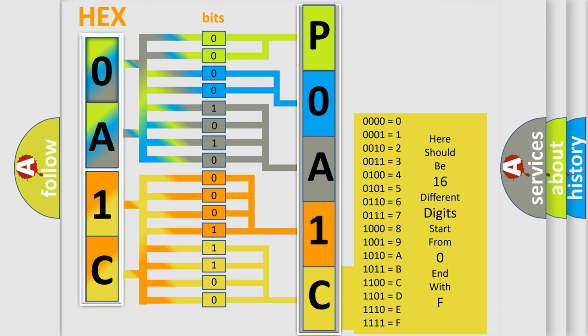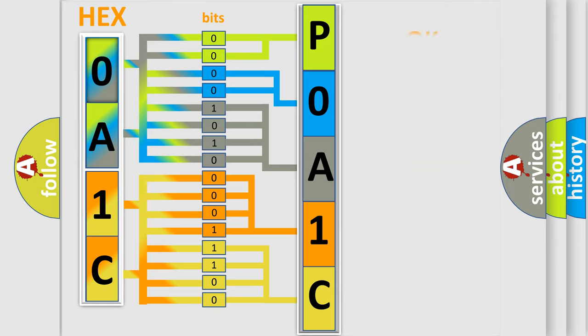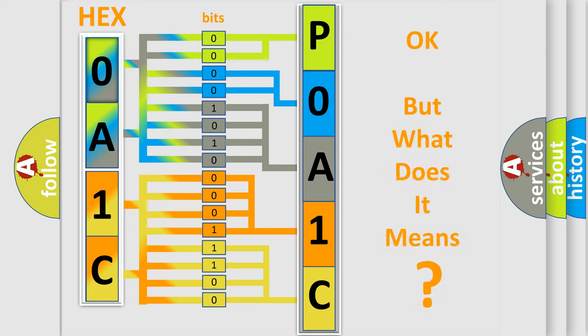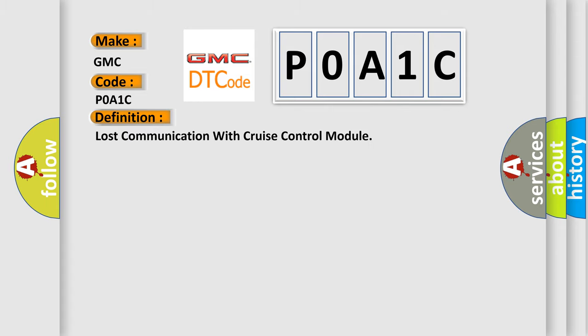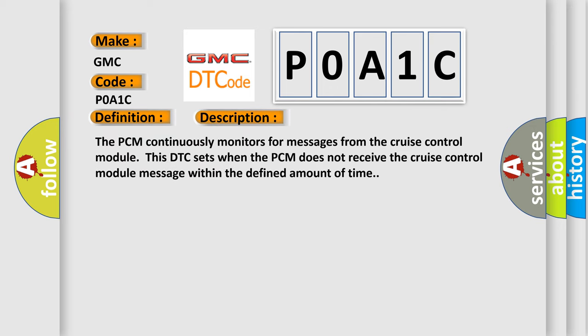We now know in what way the diagnostic tool translates the received information into a more comprehensible format. The number itself does not make sense to us if we cannot assign information about what it actually expresses. So, what does the Diagnostic Trouble Code POA1C interpret specifically for GMC car manufacturers? The basic definition is: Lost communication with cruise control module. The PCM continuously monitors for messages from the cruise control module. This DTC sets when the PCM does not receive the cruise control module message within the defined amount of time.